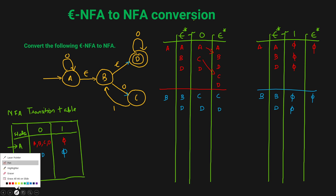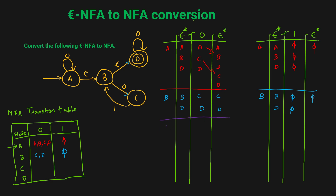Now for state C. The Epsilon closure of state C is just state C itself. If you get input 0 in state C, it's not mentioned, so phi, and the Epsilon closure of phi is phi — so state C on input 0 gives phi. For input 1, the Epsilon closure of C is C. In state C, if you get input 1, you go to state B. The Epsilon closure of B includes B and D. So state C on input 1 gives B and D.